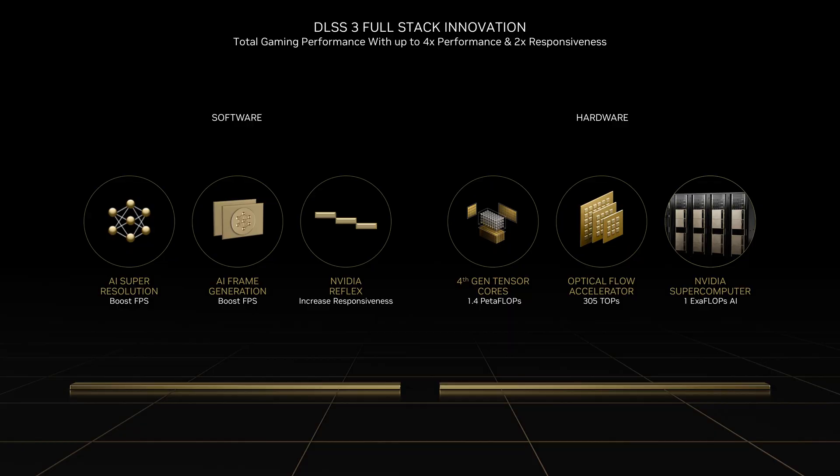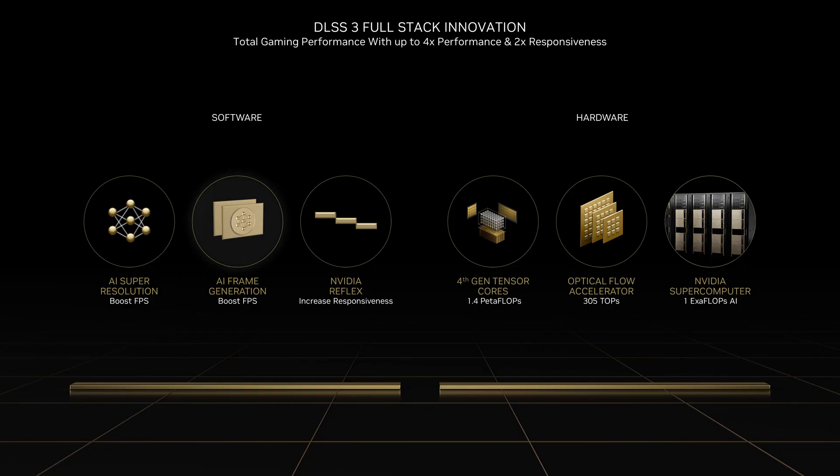DLSS 3 has three main software components. The first is DLSS Super Resolution. We are continuing to develop DLSS Super Resolution for all GeForce RTX gamers, and it's a core part of DLSS 3. The second component is DLSS Frame Generation, where we use optical flow acceleration and neural networks to create additional frames to increase smoothness.